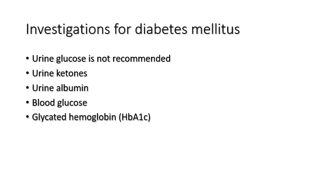Urine albumin is one of the most important urinary-based investigations in diabetes mellitus, whether type 1 or type 2, because it gives us a clue for the diagnosis of diabetic nephropathy at different stages. Blood glucose and glycated hemoglobin A1C both give us the basis for the diagnosis of diabetes mellitus in either type 1 or type 2, and are also important in following patients to assess the degree of glycemic control.